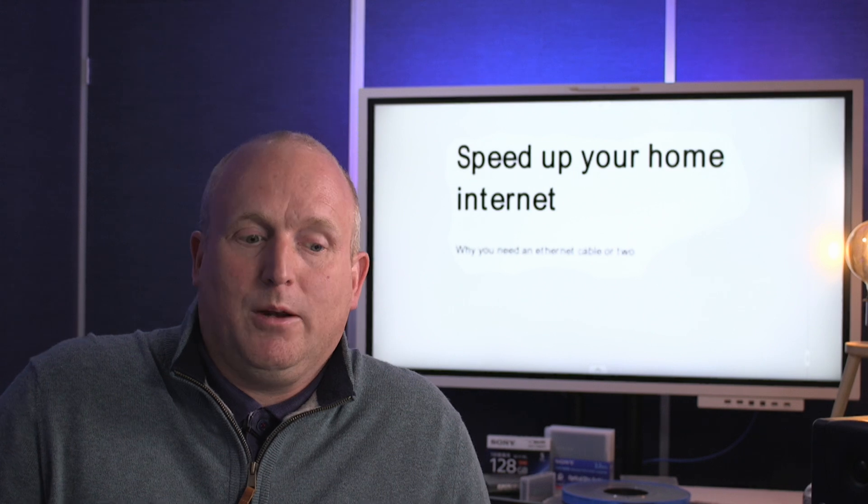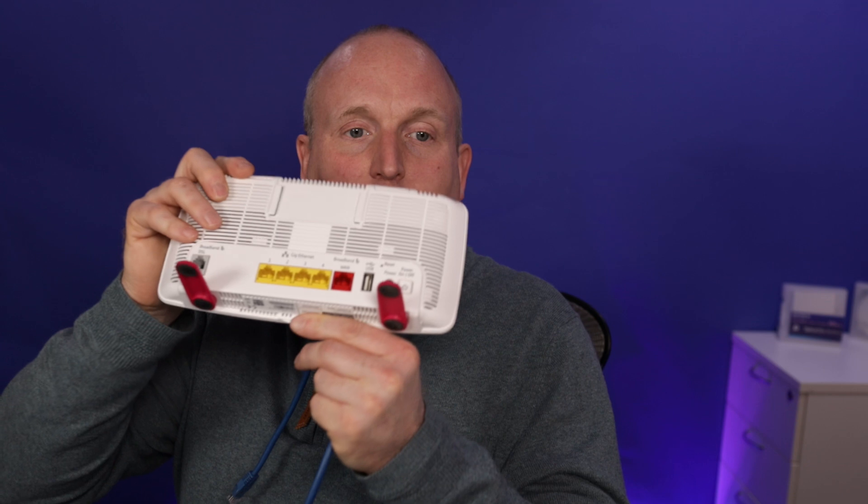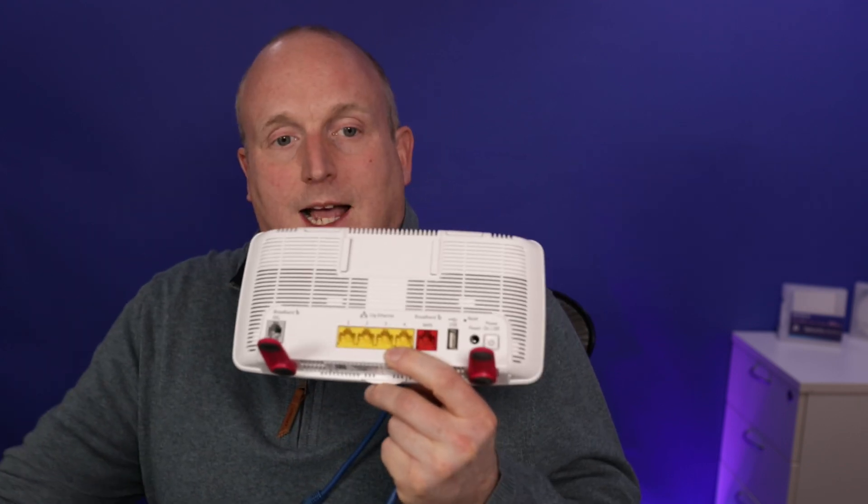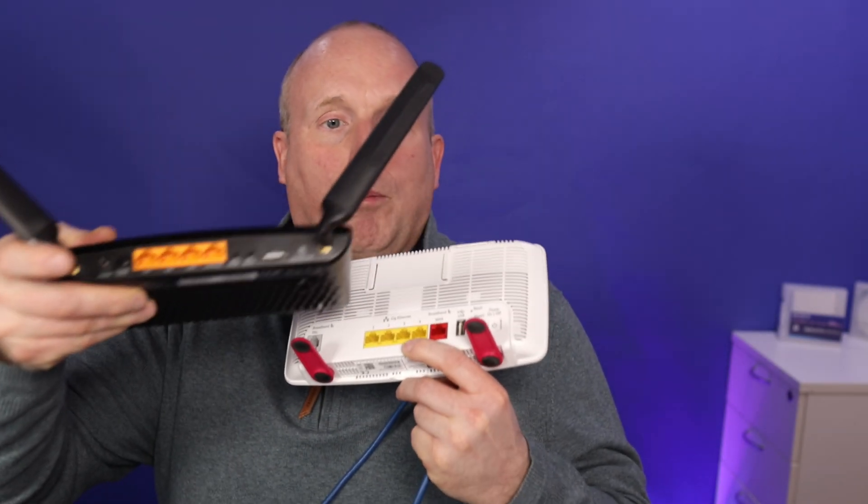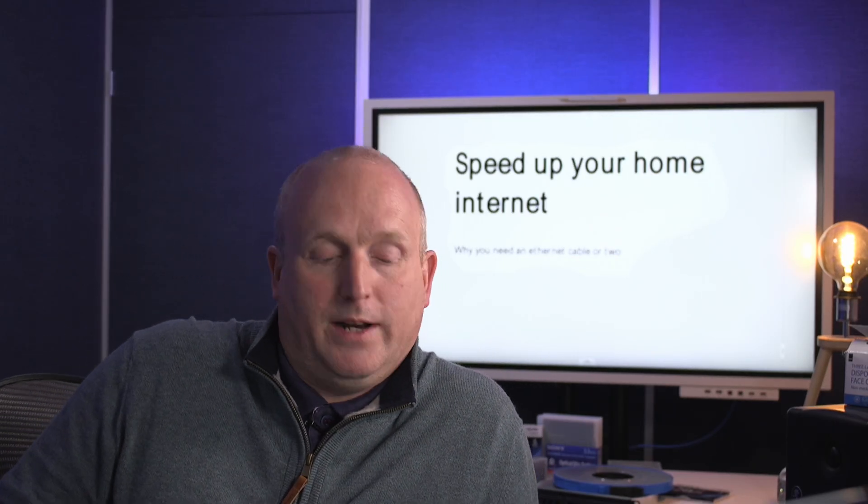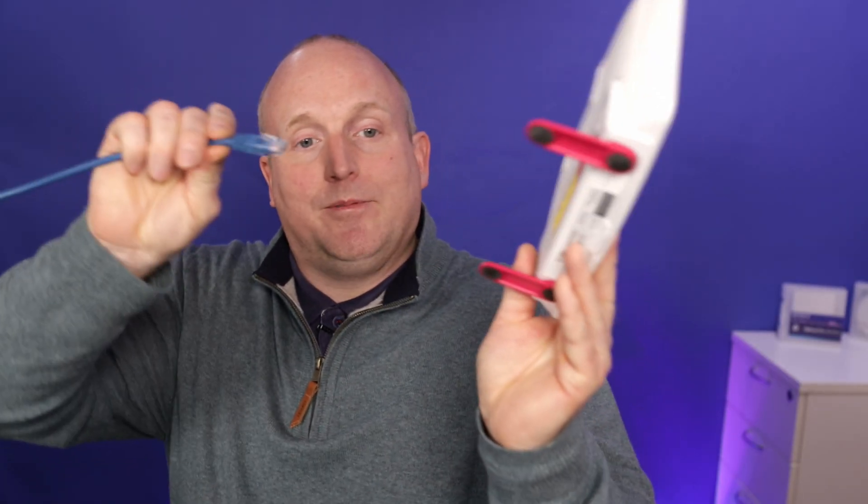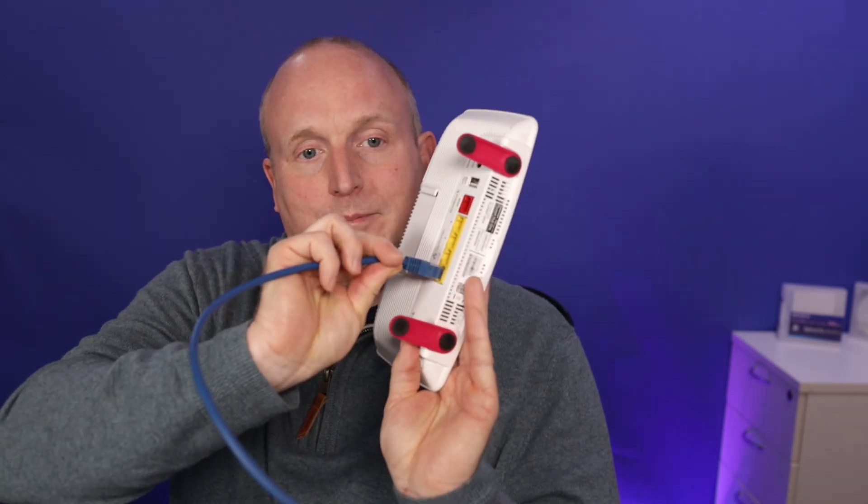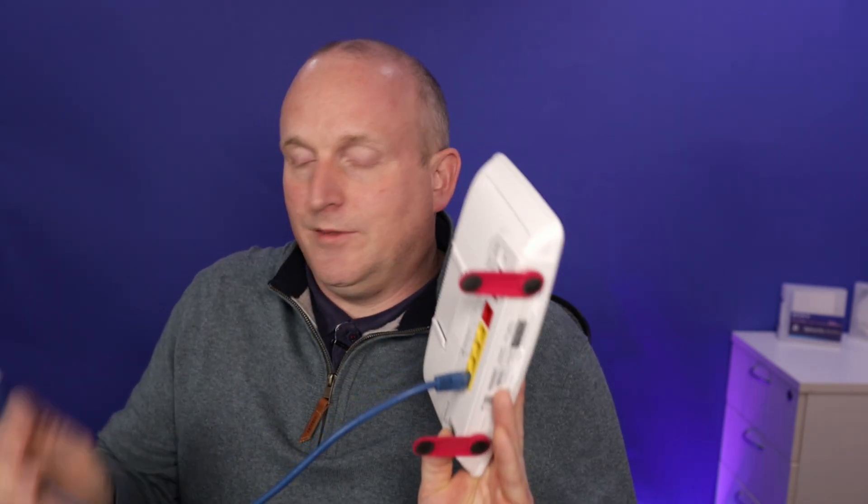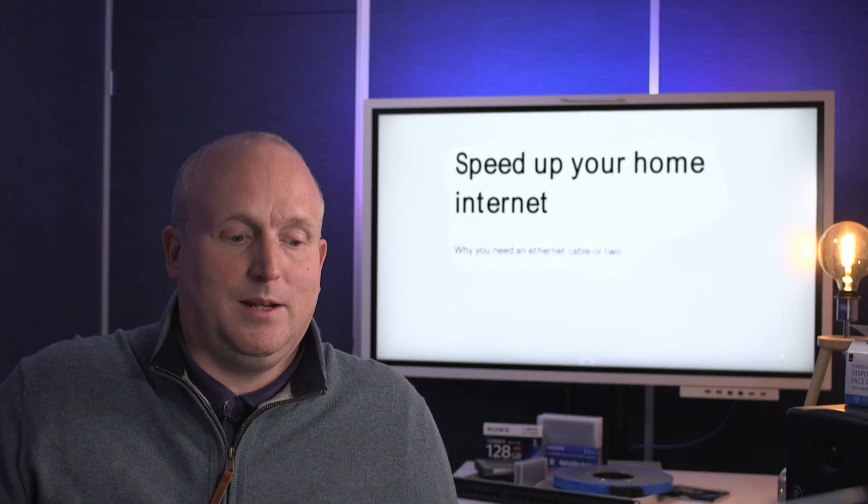So I'm going to show you how with the use of a simple ethernet cable, one like this, you can plug into the back of your router, and you'll find nearly every router has on the back four ports that are normally yellow in color and marked either LAN or ethernet. By simply plugging in a cable into the back and then into the device, back of the TV or games console, you can massively improve the performance.